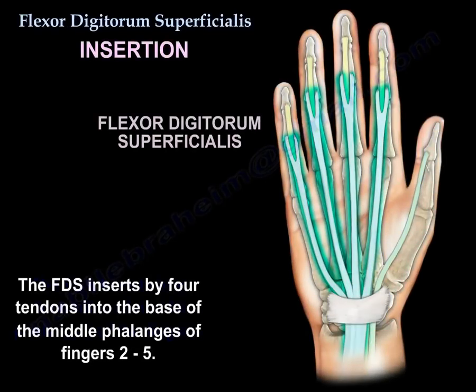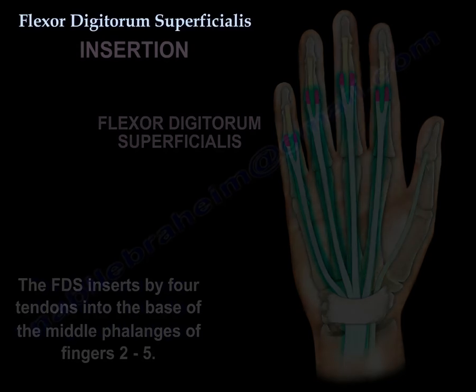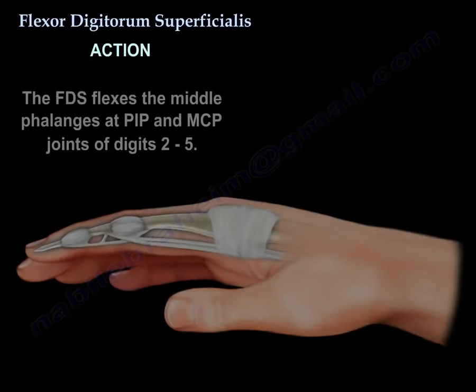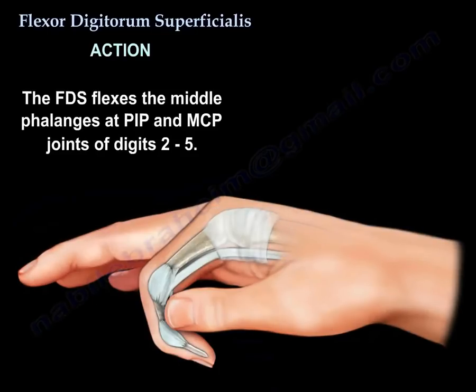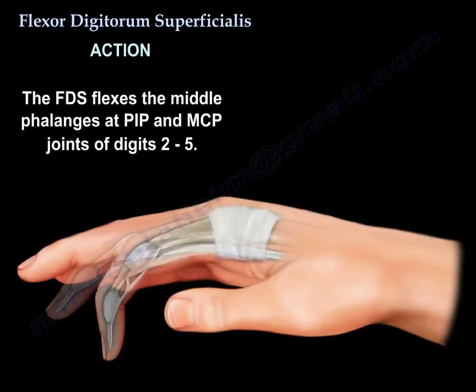Insertion: by four tendons into the base of the middle phalanges of fingers two to five, into the radial and ulnar aspects of the proximal half of the middle phalanx. Action: it flexes the PIP and MCP joints of digits two to five.